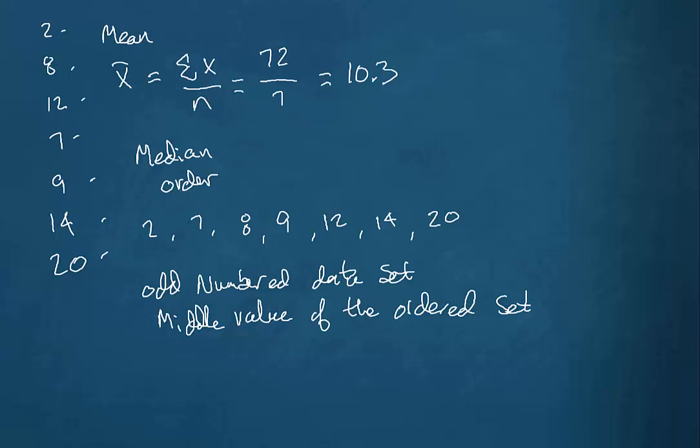Well, we have 1, 2, 3, 4, 5, 6, 7 data values. And so the fourth one would be the one in the center. Counting from the bottom up or the top down, we'd have 1, 2, 3, 4. It occupies that fourth position counting from either direction. So for this data set, the median would be 9.